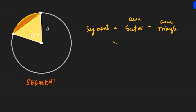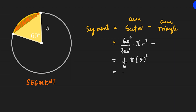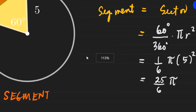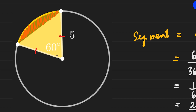The area of the sector here is 60 over 360 times pi r squared — since this sector is 60 degrees. That's 1 over 6 times pi times 25, giving us 25 pi over 6 for the area of the sector. Now we need the area of the triangle. Since both sides are radii and they're equal, and the central angle is 60 degrees, the other two angles are also 60 degrees — this is an equilateral triangle with side 5.